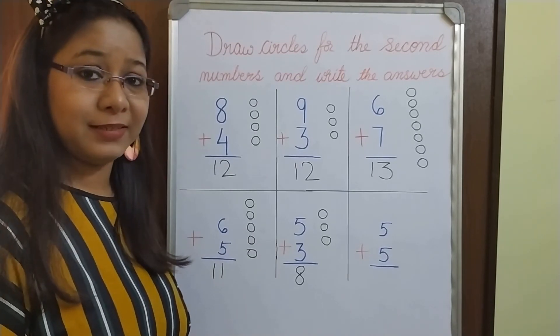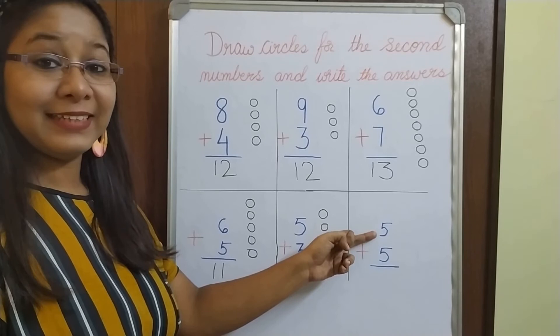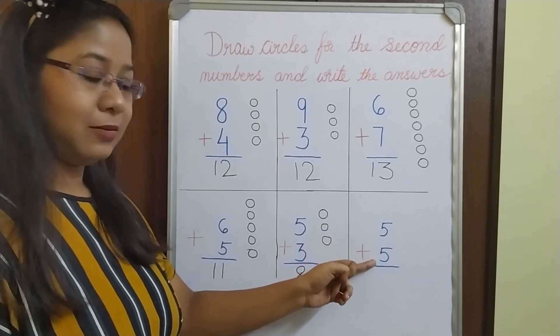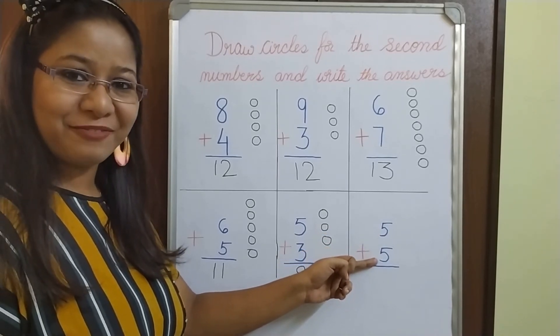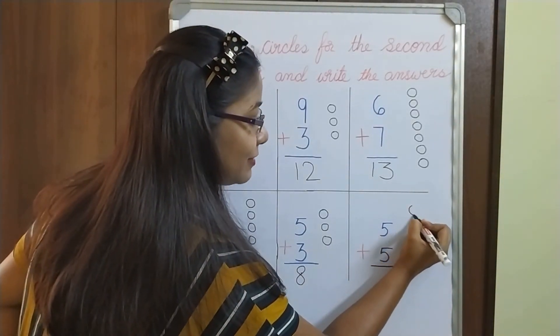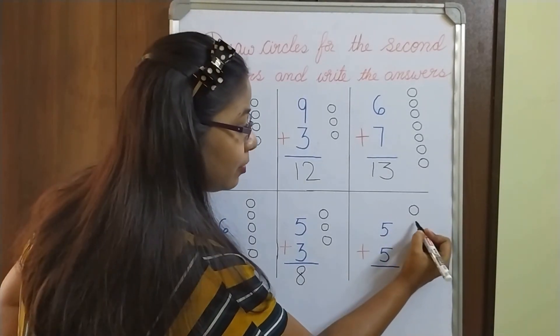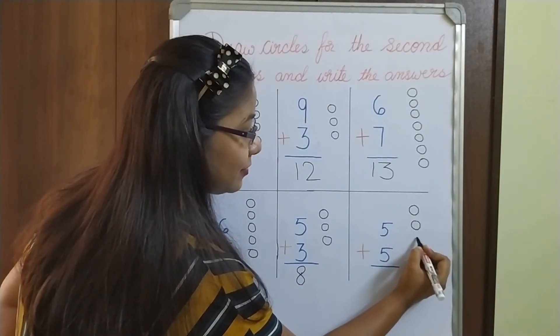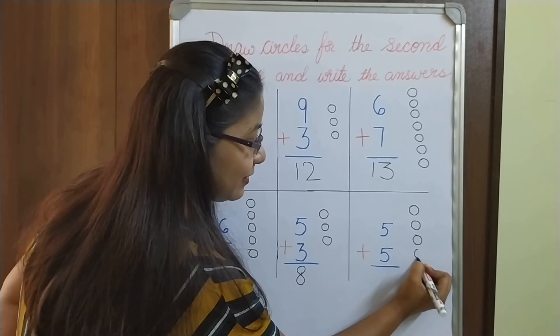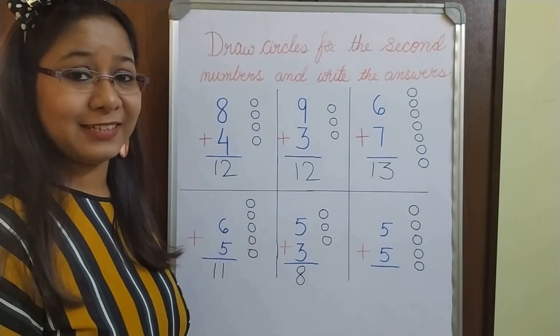Now you have to tell me. Okay. Here the first number is? Yes, 5. Oh, second one also 5. Right. Here I have to draw 5 circles. I will draw. You will count. Very good. It's 5 circles.